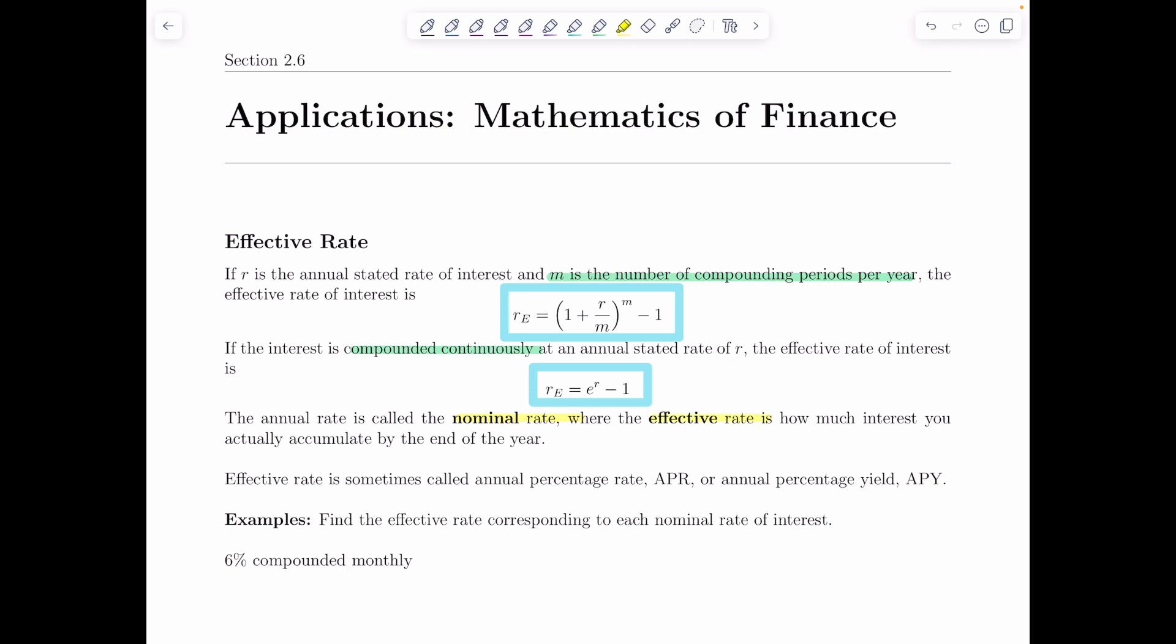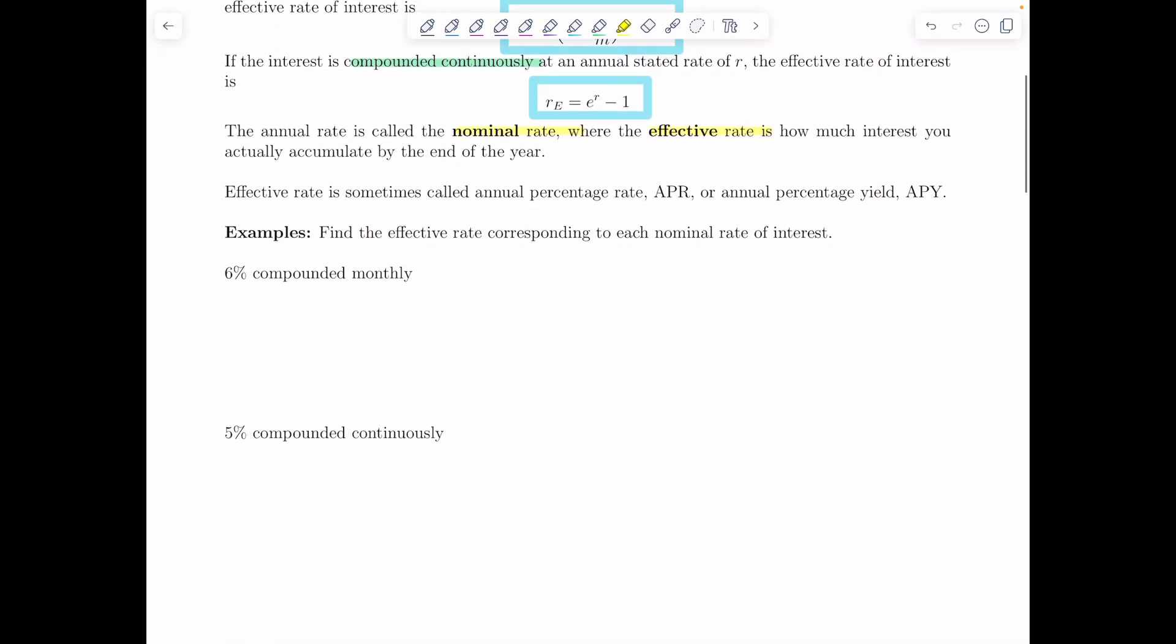Effective rate is sometimes called annual percentage rate, APR, which you've probably heard from credit card companies before, or annual percentage yield, APY. So here we're going to look at find the effective rate corresponding to each nominal rate of interest. And for all these problems let's just round everything to three decimal places.